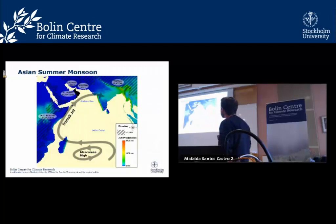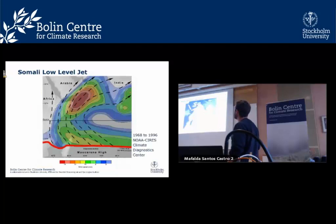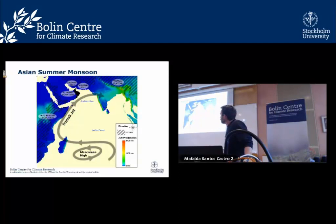This map shows topography, with hatched areas higher than 1 kilometer that have the possibility of influencing the Somali jet. Colors represent precipitation rates for July — a lot of moisture is picked up from the Indian Ocean and the Arabian Sea and dumped into East India and Southeast Asia. Topography is only one factor; there is also a low-pressure system in India helping to draw the jet in. The Somali jet apparently started around 10 million years ago, the same time that high topography was forming across this region.